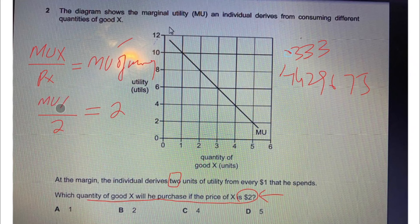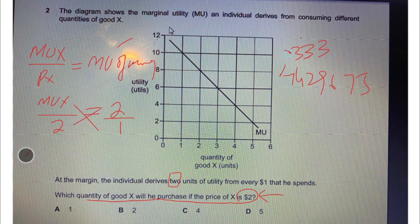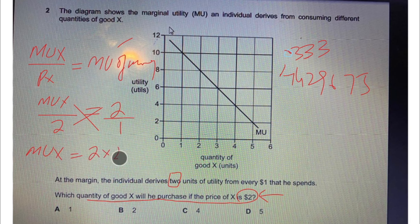Next, cross multiply these values. Marginal utility of X equals 2 times 2, which equals 4. So the marginal utility of X should be 4 for utility maximization.